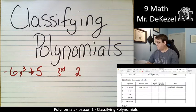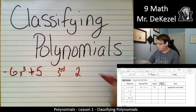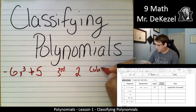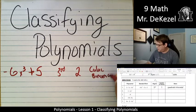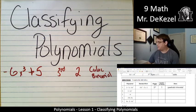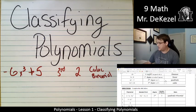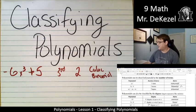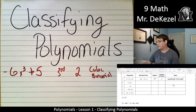So, that means we would call this a cubic binomial. Third degree is cubic, and we have two parts to it, so that's binomial. Put those together.